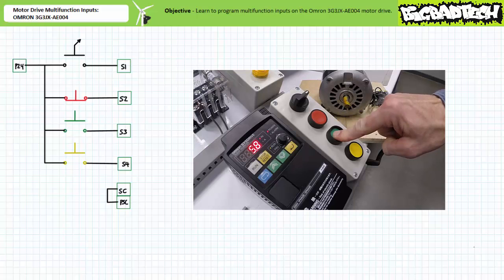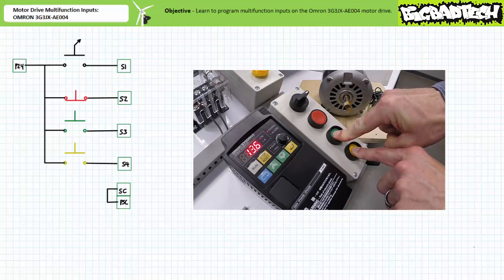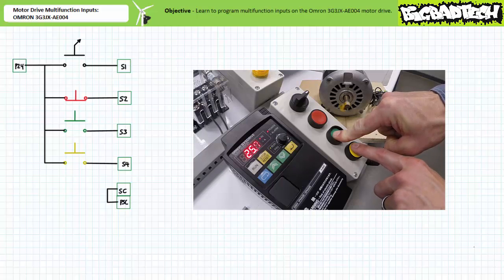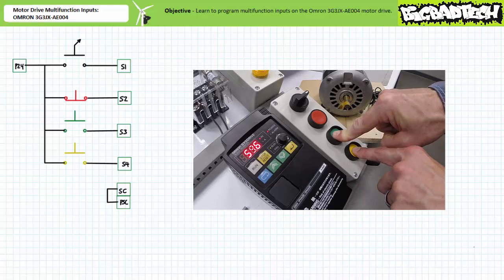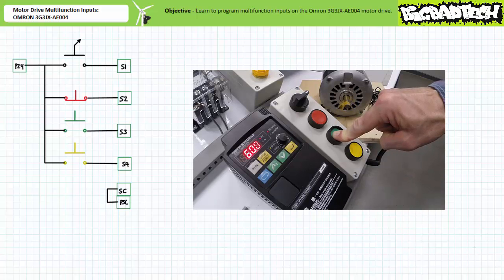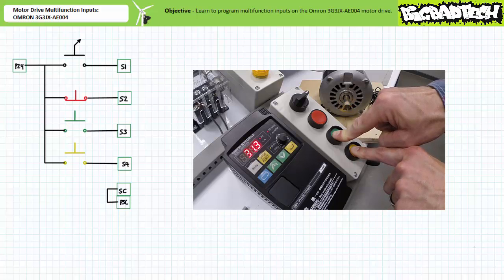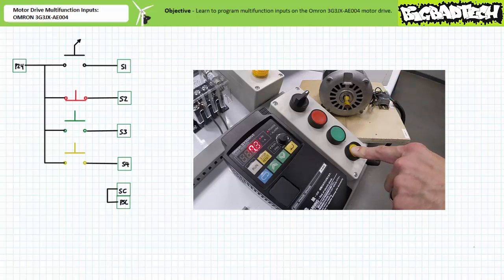When the forward input closes and is held closed, the motor drive accelerates the motor as previously. When the reverse input also closes, the motor drive doesn't burst into a ball of white hot fire, but rather begins a temporary deceleration whenever both inputs are being held closed. When given enough time to complete acceleration in the forward direction, the momentary closure of the reversing input also temporarily decelerates the motor whenever both inputs are being held closed. When both inputs are held closed long enough to fully decelerate the motor, the motor drive keeps the motor at rest until only one input is clearly asserted. When reverse remains closed and forward opens, the motor drive accelerates the motor in the opposite direction.